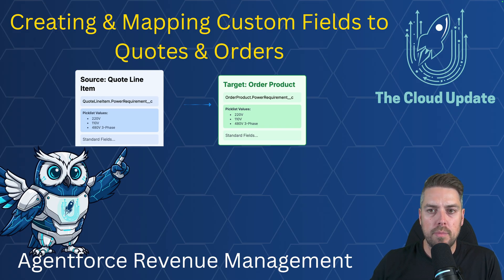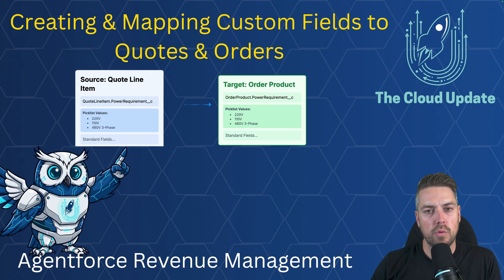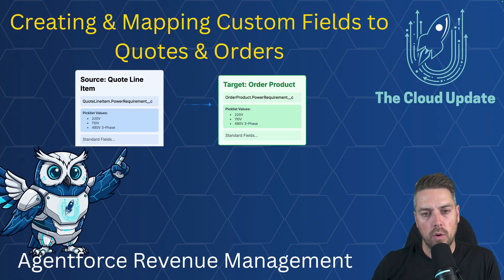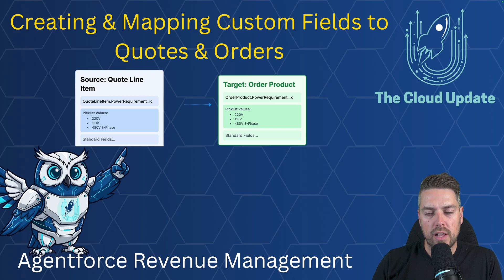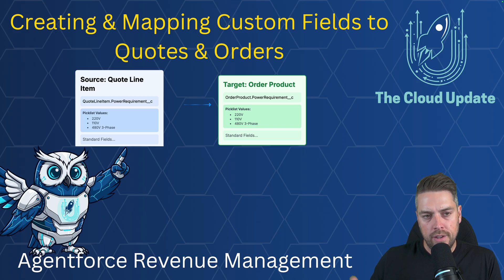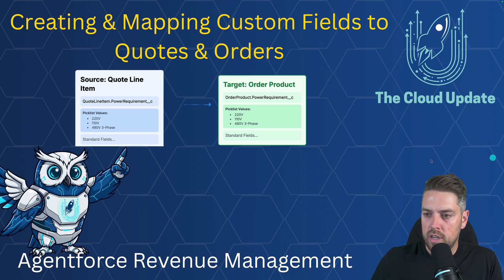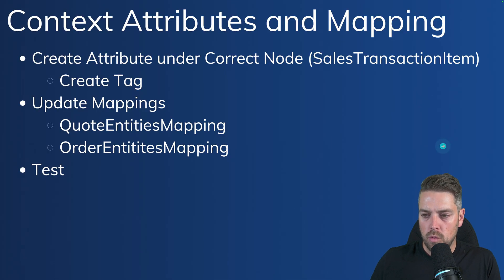This is going to be part one of a three-part series. Part two will focus on how you can bring values from product into quote line item. And finally, we're going to take a look at how you can take values from order items and take those into asset action source. Let's get going with part one of this series.